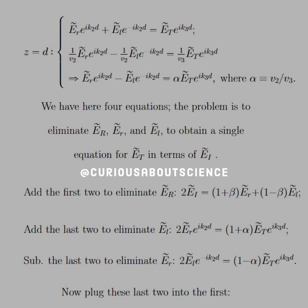Same thing, different day. Now, we have four equations. And the problem is to eliminate Er, e little r, and El to obtain a single equation for the transmitted based on the incident wave. Okay. So what we have to do is add the first two to eliminate Er. Boom, boom. And then we have to add the last two to eliminate El. Boom, boom. And now you see if we subtract the last two to eliminate e little r, we get boom, boom, boom. Okay, so we have something with t, something with t, something with little r, little r, little l, and i. Now, we plug these two, the second and third line things into the first equation. And we should have everything we need to put in terms of Et and Ei.